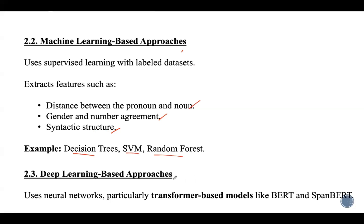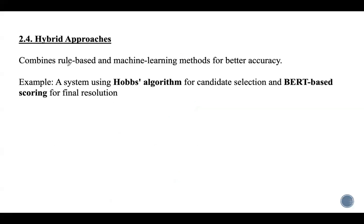Deep learning-based approaches use neural networks, particularly transformer-based models like BERT and SpanBERT. These context-aware models understand references based on deep contextual embeddings and can handle long-distance dependencies and learn complex relationships beyond syntactic rules. Hybrid approaches combine rule-based and machine learning methods for better accuracy — for example, using Hobbs' algorithm for candidate selection and BERT-based scoring for final resolution.